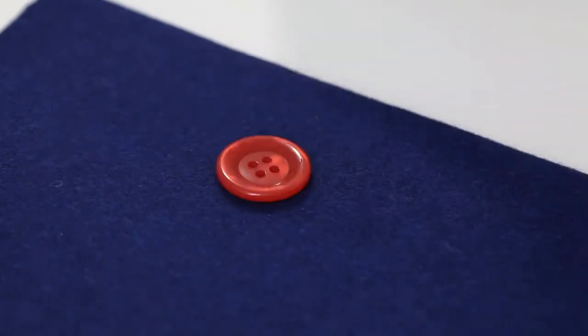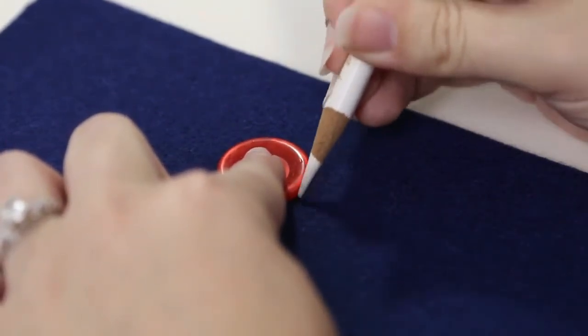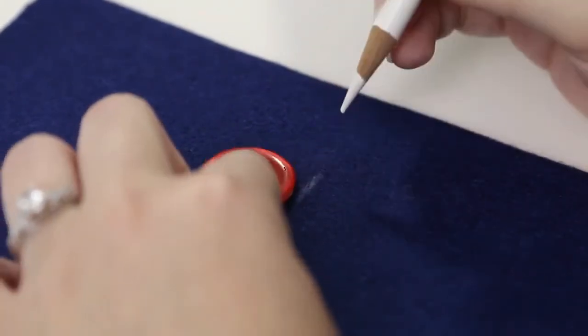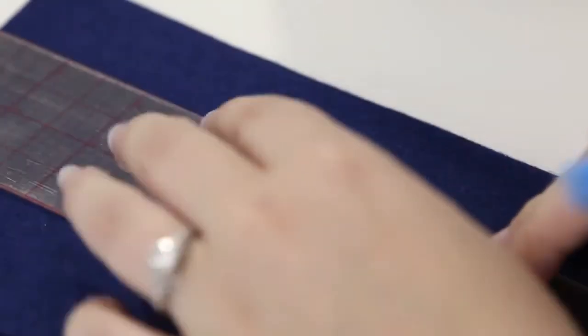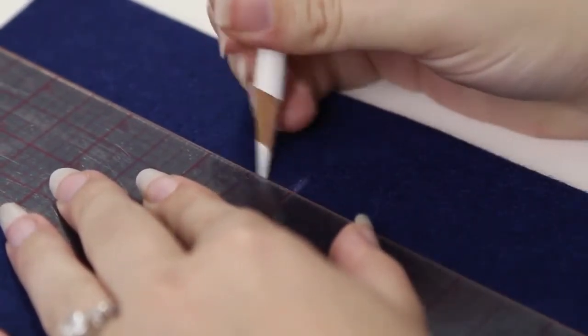I need to mark where I'm going to sew the buttonhole on my fabric. So I'm going to place the button on my fabric where I want the buttonhole to be. I need to mark the bottom of the buttonhole, which is where it will start sewing. Then I will use my ruler to make a line in the middle. This is just to help me keep my fabric straight when I put it under the buttonhole foot.